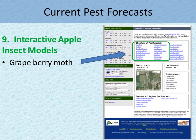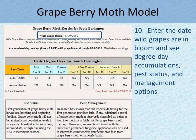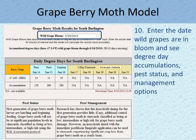NEWA also gives you a resource for managing grape berry moth, which you can get to from the station page you choose close to your site. For the grape berry moth model, if you enter the date wild grapes are in bloom at your vineyard site, the model gives you degree day accumulations, pest status, and management options.